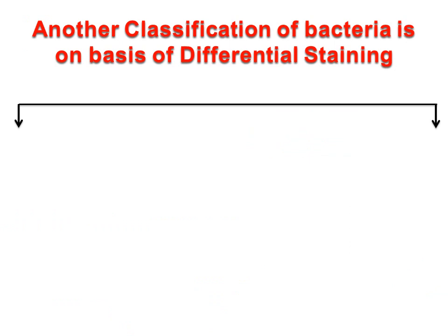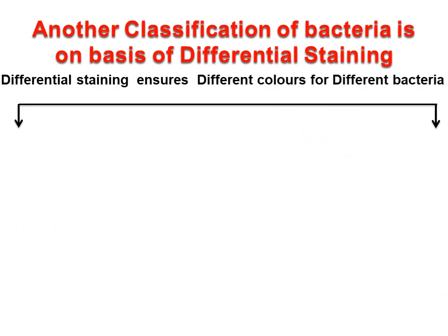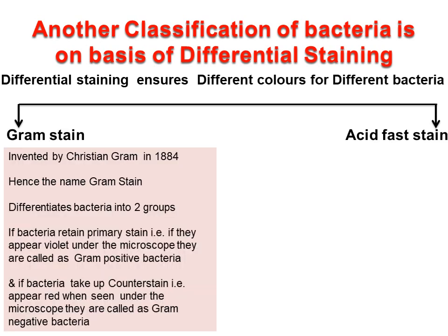The classification of bacteria on the basis of differential staining: differential staining ensures different colors for different bacteria. The two most widely used differential stains are Gram stain and acid-fast stain. Gram stain was invented by Christian Gram in 1884, hence the name Gram stain. This staining differentiates bacteria into two groups. If bacteria retain the primary stain — that is, if they appear violet under the microscope — they are called gram-positive bacteria.